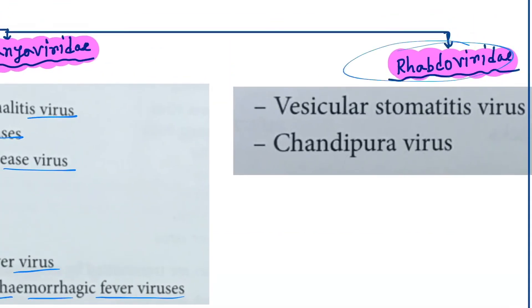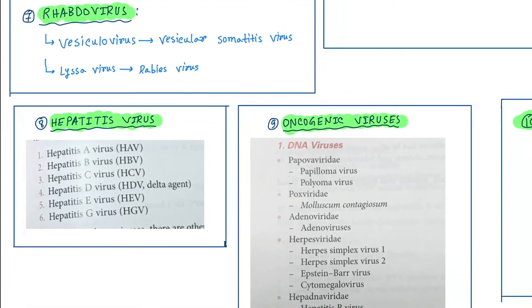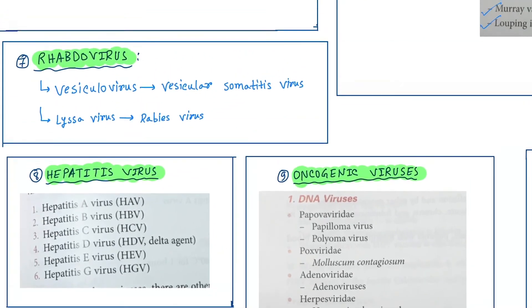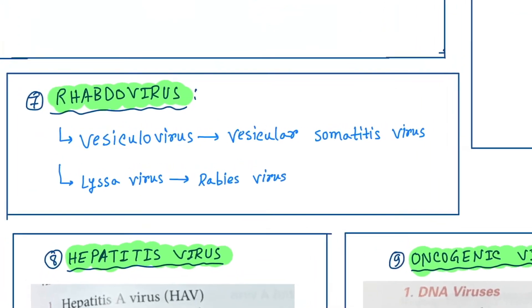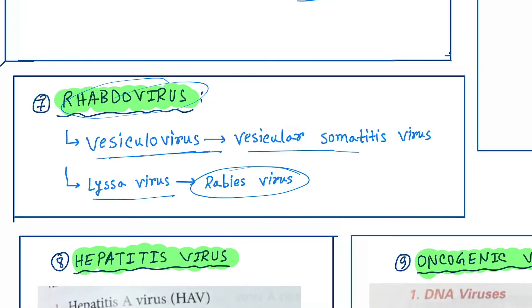Next is Rhabdoviridae. The viruses are vesicular stomatitis virus and Chandipura virus. The genera are vesiculovirus and lyssavirus. Under lyssavirus there is rabies virus, and under vesiculovirus there is vesicular stomatitis virus.